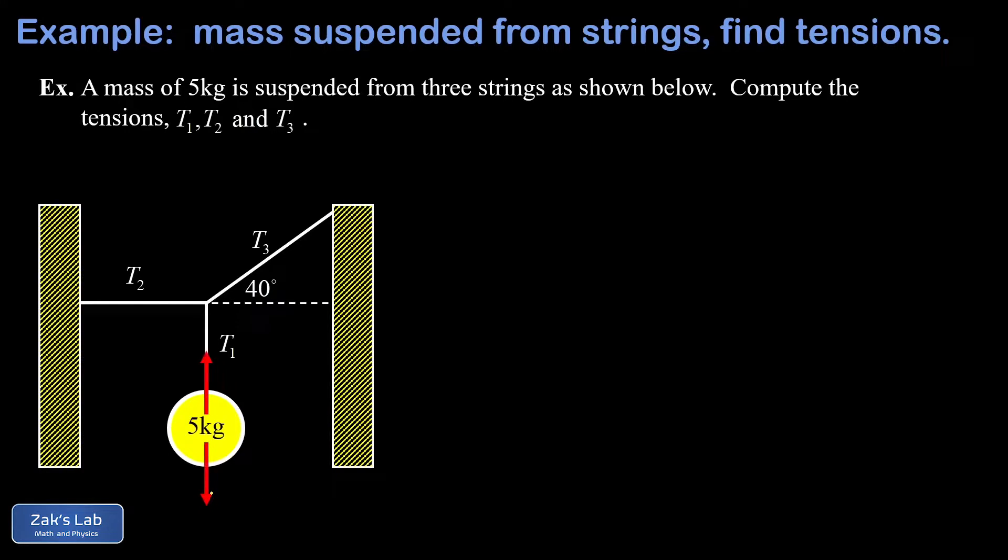We have two forces to look at. There's the force of gravity pulling down on the five kilogram mass, and that's given by mg. I take my five kilograms and multiply by the acceleration of gravity, which is about 9.8 meters per second squared. We multiply these and get 49 newtons.